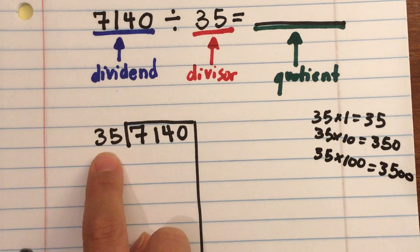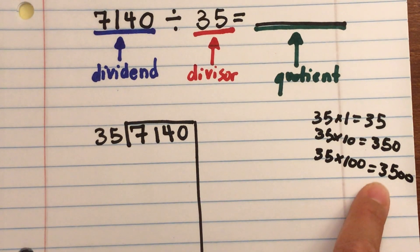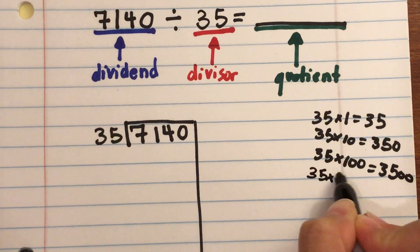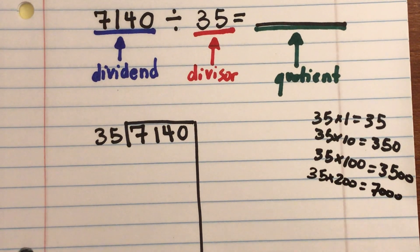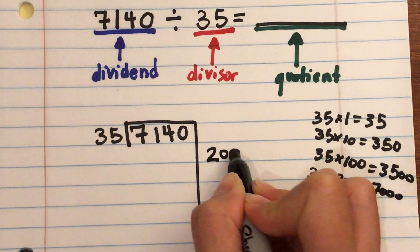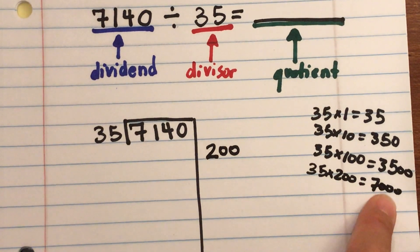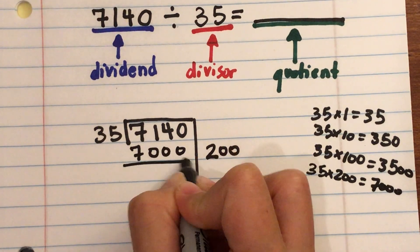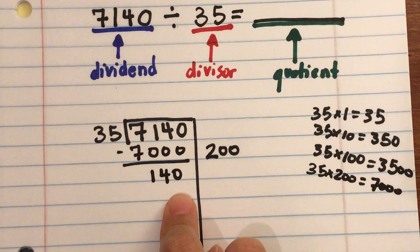What if I double 100? 35 × 200 = 7,000, and 7,000 fits inside 7,140. So 35 goes into 7,140 at least 200 times. I write 200 as my first partial quotient on the right side. 35 × 200 = 7,000; subtract, and I have 140 remaining.